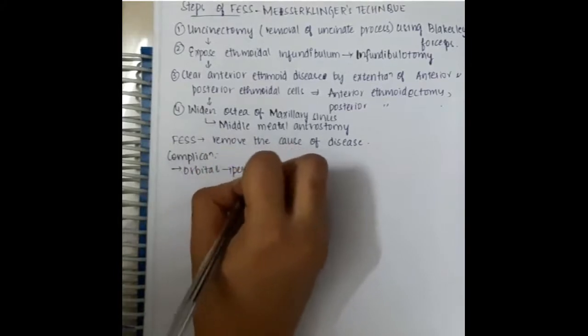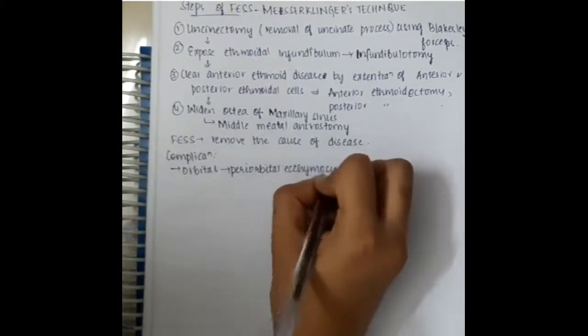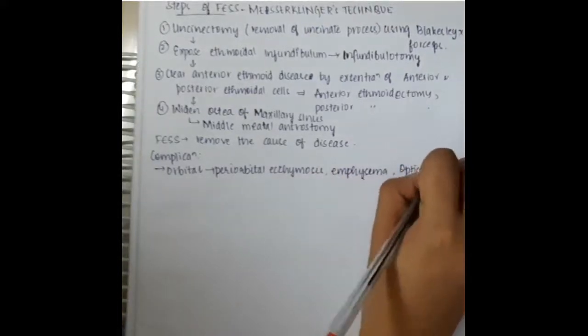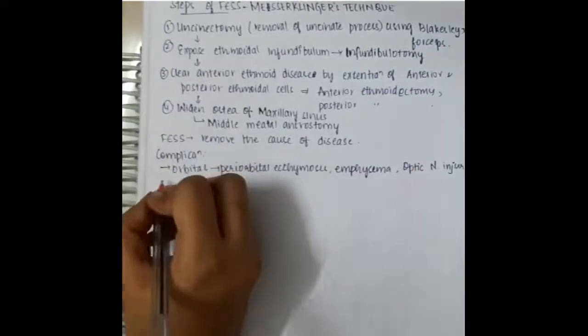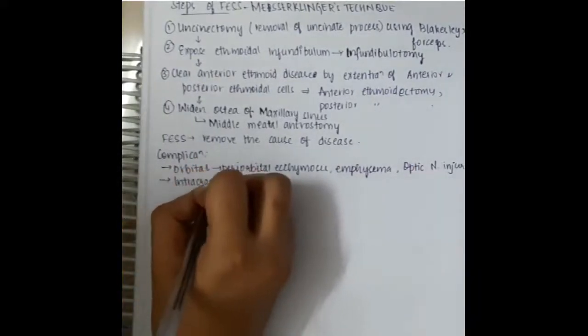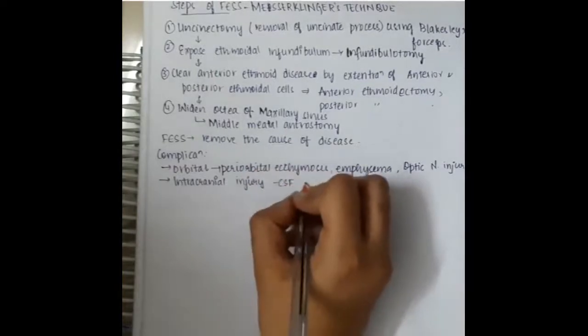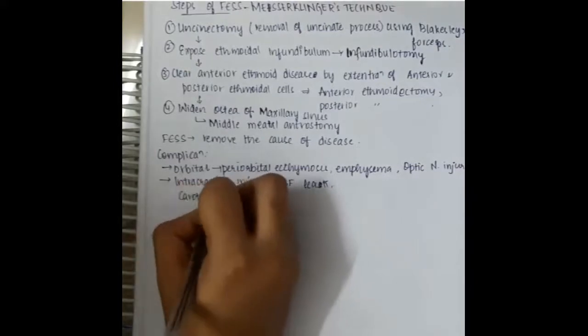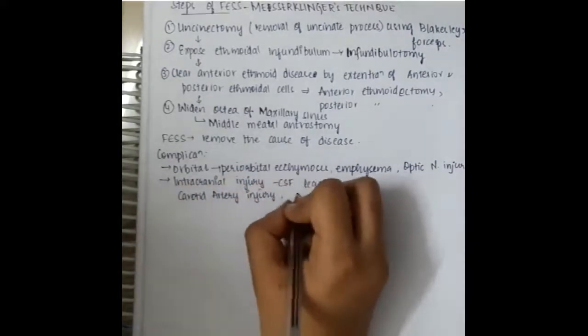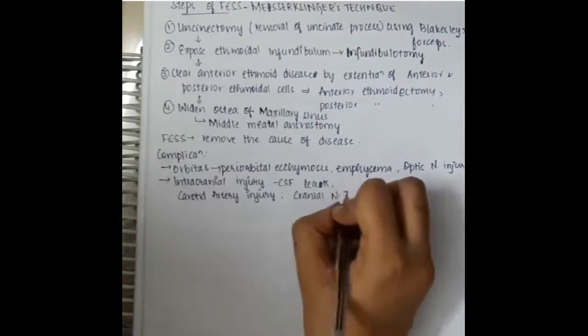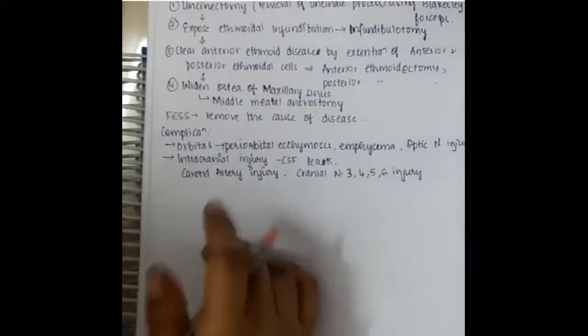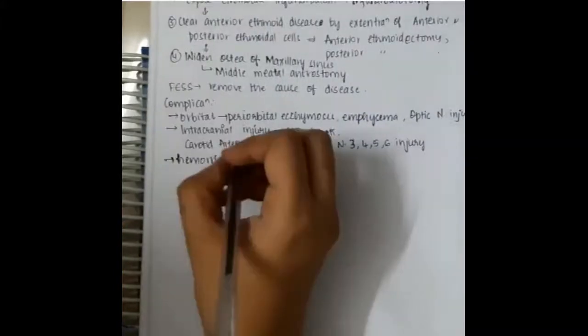Complications include orbital complications which include periorbital ecchymosis, emphysema, and optic nerve injury. This also includes intracranial injuries which is CSF leak, carotid artery injury, and cranial nerve third, fourth, fifth, sixth injury. It can also cause hemorrhage from sphenopalatine and ethmoidal arteries.